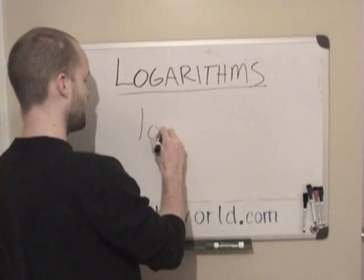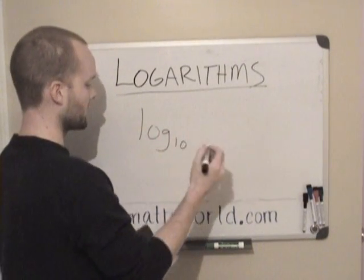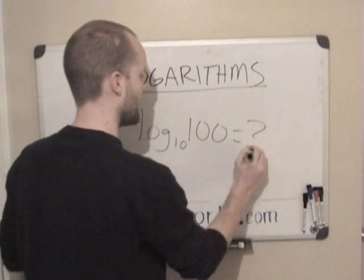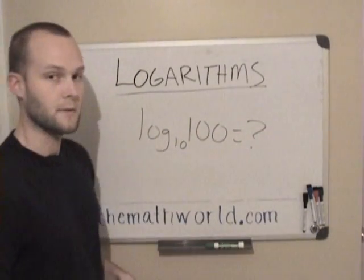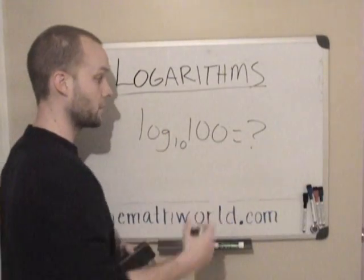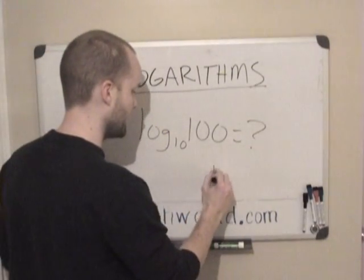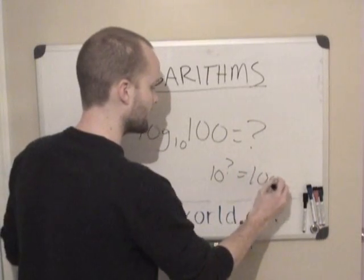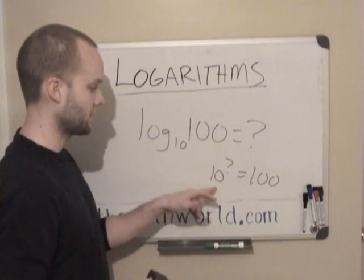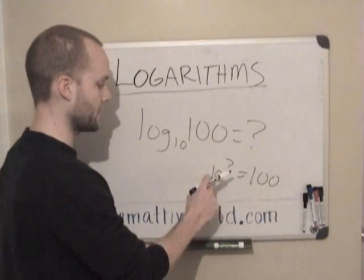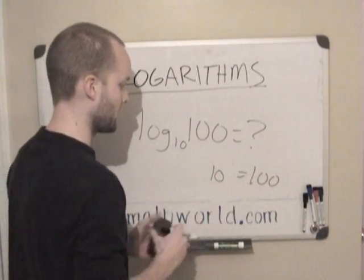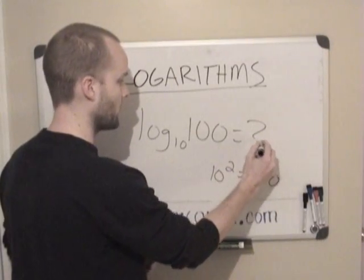Let's say we have log base 10, which is very common that you'll see. And we have 100 here, and it says, what is the answer here? As you can already tell, another way we can write this is 10 to the what power is equal to 100. And so in this case, you can probably already guess, 10 squared equals 100. So 2 goes here, and in the same way, our answer is 2.